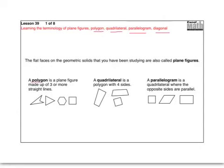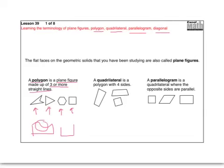First of all, a polygon is a plane figure — that means a flat shape — made up of three or more straight lines, and it also has to be closed. This shape is a polygon because it has four sides and it's closed. This is not a polygon because it has a curved side on it. This is not a polygon because there's an opening right here.